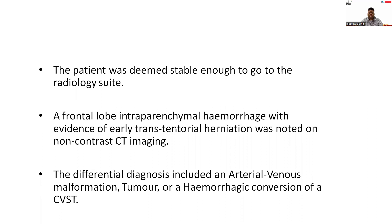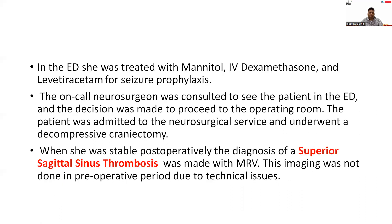A frontal lobe intra-parenchymal hemorrhage with evidence of early transtentorial herniation was noted on non-contrast CT imaging. The differential diagnosis included arteriovenous malformation, tumor, or hemorrhagic conversion of cerebral venous sinus thrombosis. In the emergency department, she was treated with mannitol, intravenous dexamethasone, and levetiracetam for seizure prophylaxis. The on-call neurosurgeon was consulted and the decision was made to proceed to the operating room.